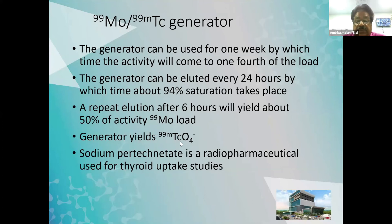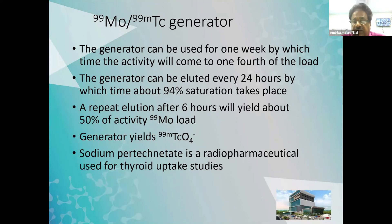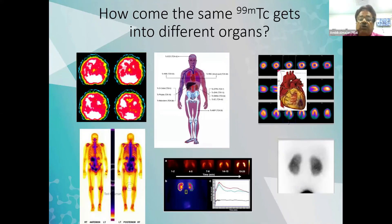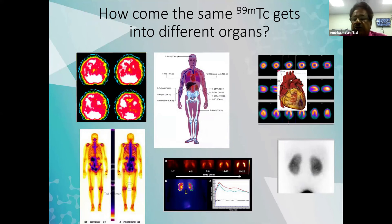The pertechnetate from the generator is used as a radiopharmaceutical directly for thyroid uptake studies. After eluting, we are directly getting a radiopharmaceutical which can be used for thyroid uptake studies. Now, one question is: how does the same technetium get into different organs? We are getting only pertechnetate, but how are we able to manipulate it and perform a large number of studies using pertechnetate?